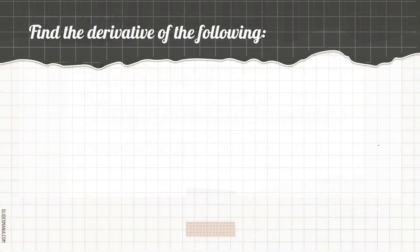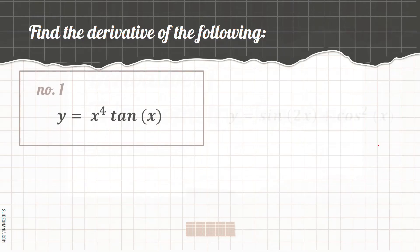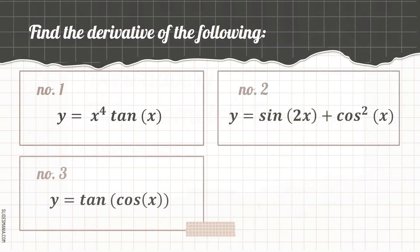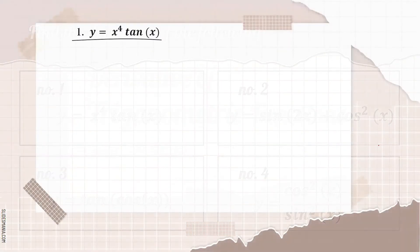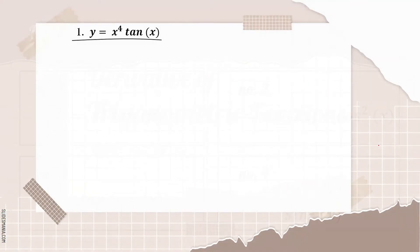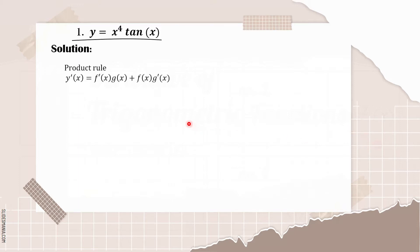Now we are going to find the derivative of four given examples. Our first given is y is equal to x raised to the fourth power times tangent of x. In solving this, we need to use the product rule, which is y prime of x is equal to f prime of x times g of x, plus f of x times g prime of x.